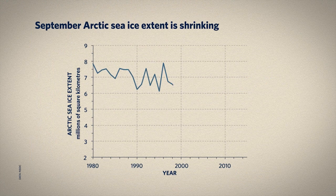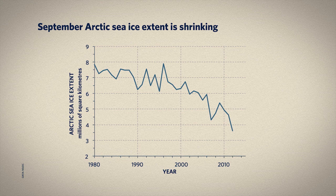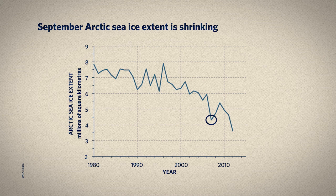Let's look at sea ice extent on a plot over time. Here we have data from 1980 through 2012. On the vertical axis, we have Arctic sea ice extent in September, which is the month at which sea ice is at its minimum. You can see the strong decline that happened in 2007, taking September's sea ice extent down to about 4.3 million square kilometers. Then, just five years later, in 2012, the sea ice extent record was broken again, and the September extent went down further to just 3.6 million square kilometers. Given the observed rates of change, there's a decent chance the Arctic will be virtually ice-free in summer within my lifetime.